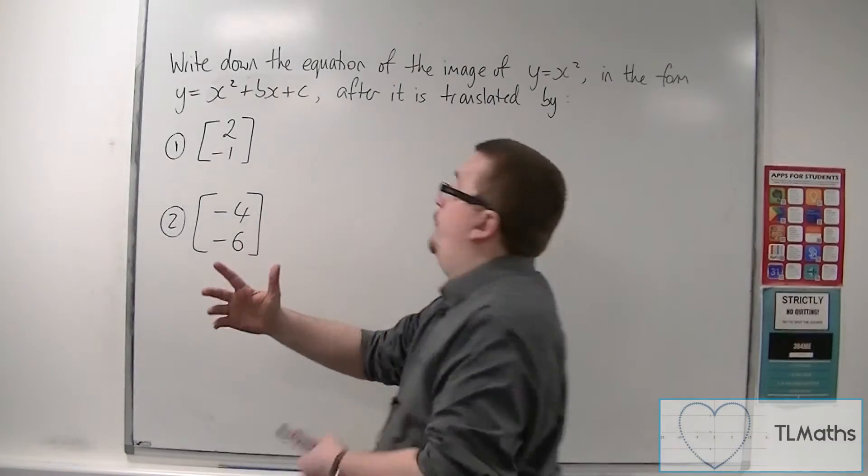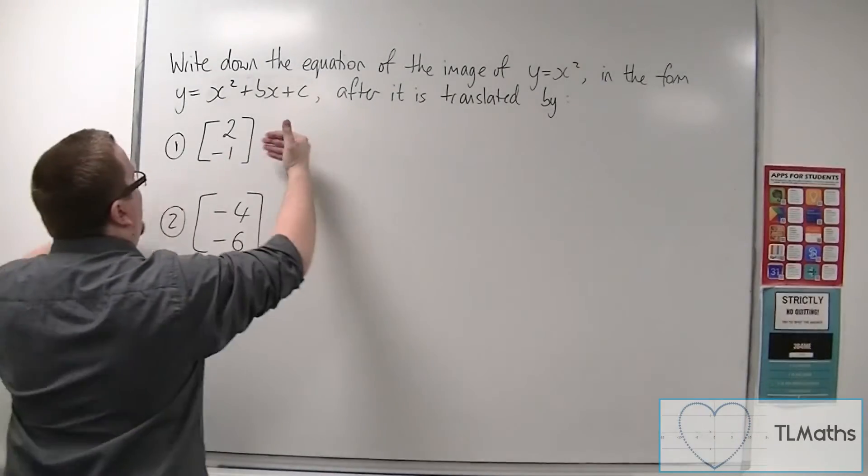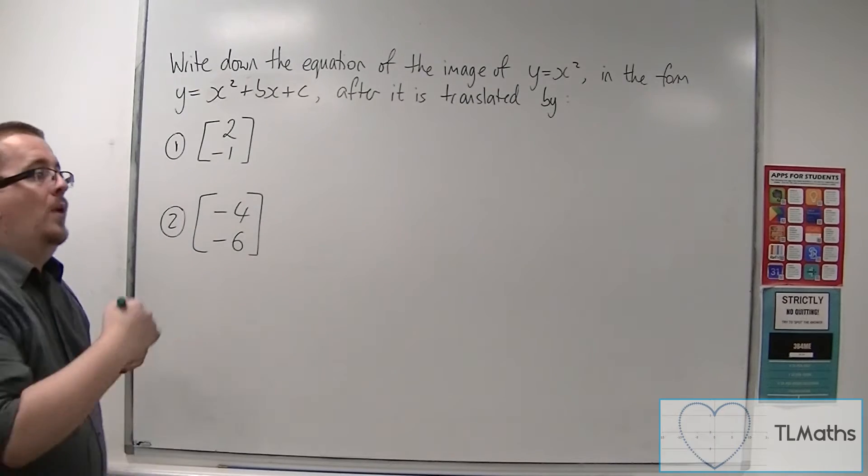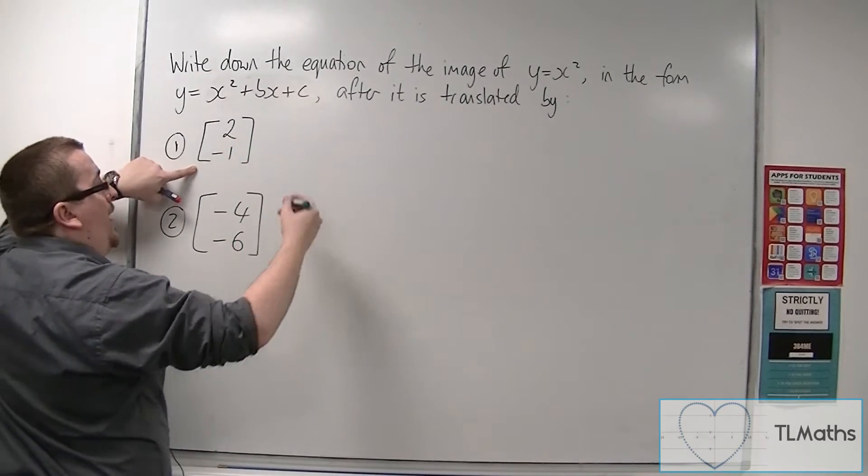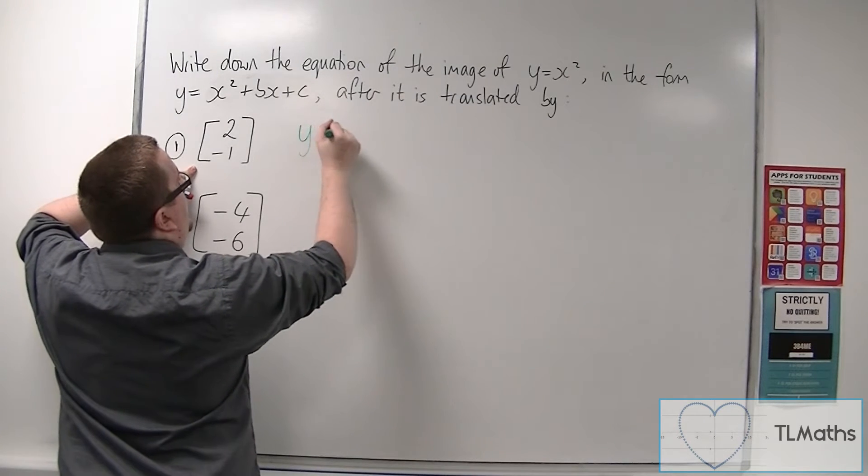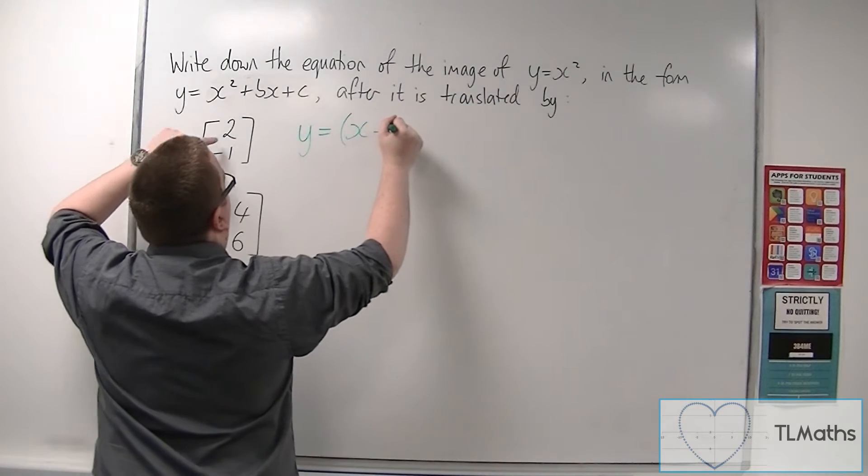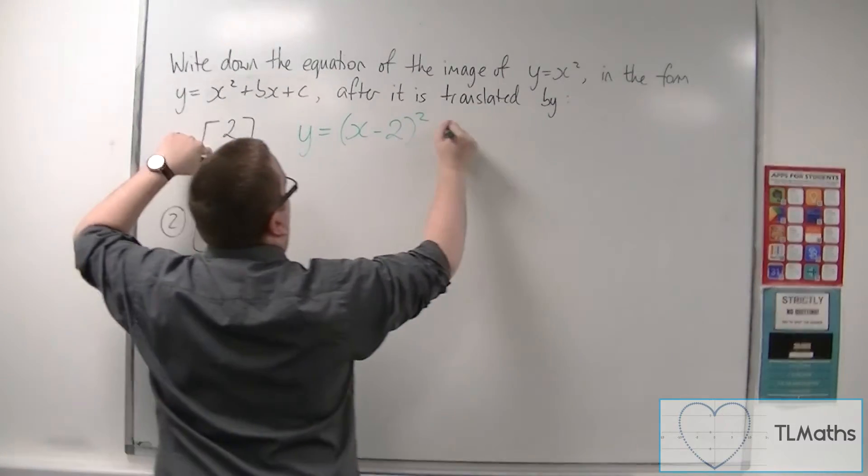So if y is equal to x squared has been translated by the vector 2 minus 1, then it will have a new equation which we can write in completed square form as y is equal to x minus 2 squared take away 1.